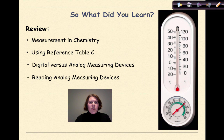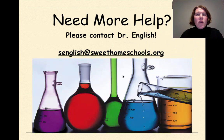So what did we learn in this little tutorial? We went over the very basics of measurement in chemistry. We talked about using the prefixes on reference table C. We talked about the difference between a digital and an analog measuring device. And then finally, a little bit on how to read an analog measuring device. Need more help? Feel free to contact me. Have a great day.